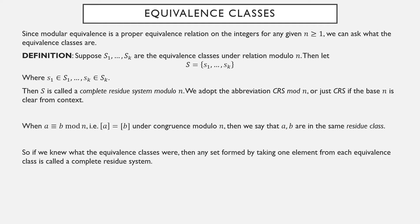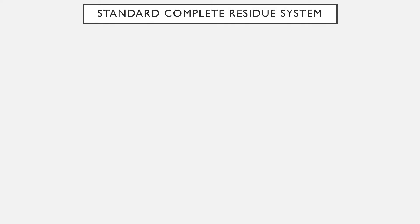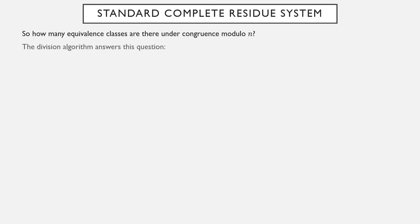So if we knew what the equivalence classes were, any set formed by taking one element from each equivalence class would be called a complete residue system. But how many equivalence classes are there? The notation S1 through Sk really suggests there are finitely many, but let's formally establish that. As it turns out, the division algorithm provides a very fast and immediate answer to this question.